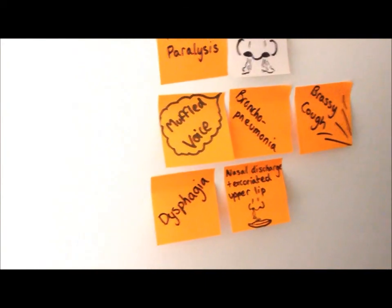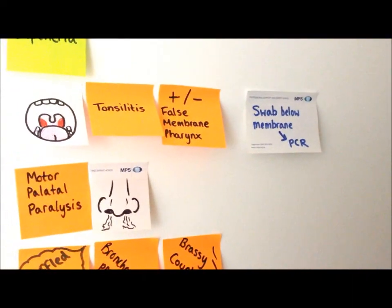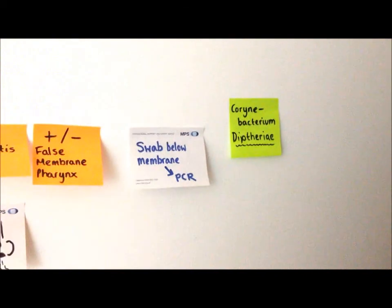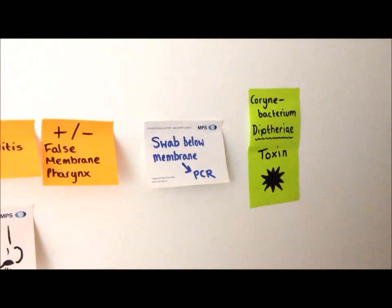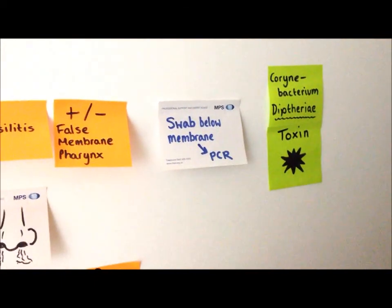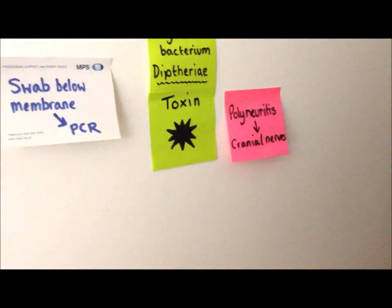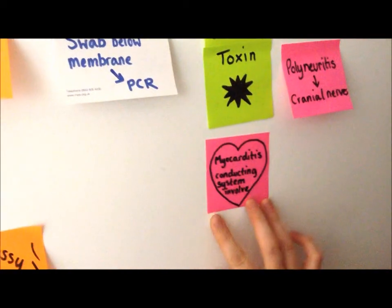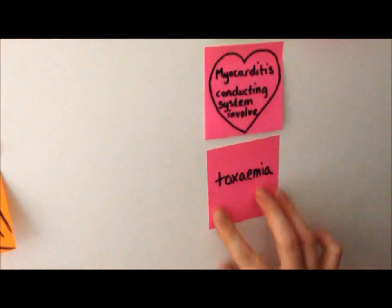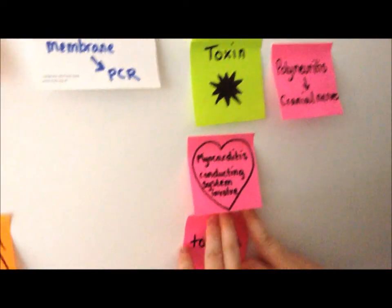It is important to swab below the membrane and examine by PCR to confirm whether diphtheria is present. Diphtheria is caused by the Corynebacterium diphtheriae toxin — it is not the actual bacteria itself but the toxin it produces that causes these symptoms. The toxin can lead to polyneuritis, which usually affects the cranial nerves first. It can also cause myocarditis and involvement of the conducting system, and it can lead to toxaemia. All three of these can lead to shock.